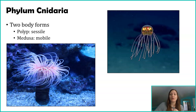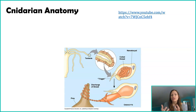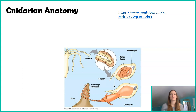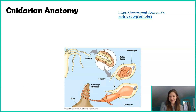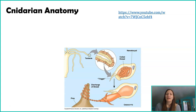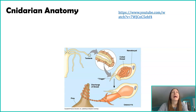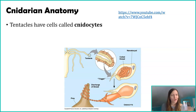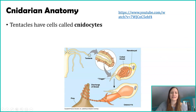For all cnidarians — whether we're talking about sea anemones or jellyfish — they share some common anatomy. If you've ever been swimming in the ocean, you may have been stung by a jellyfish. But it's not just jellyfish that sting; sea anemones do too. Within the tentacles of a jellyfish or sea anemone, there are specialized cells called cnidocytes — again, that C is silent.